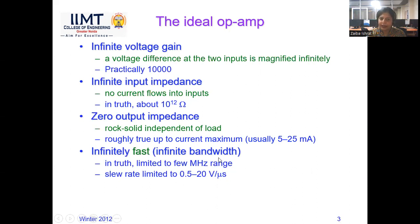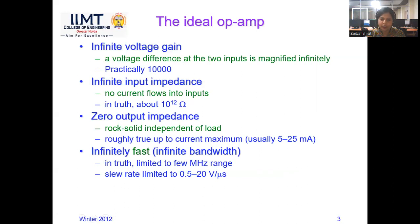The next ideal characteristic is infinite bandwidth. Bandwidth is the range of frequencies over which the op-amp can operate. This op-amp IC can work for both DC and AC signals — DC has zero hertz frequency, while AC has higher frequency. In the ideal situation, bandwidth should be infinite. But in practice, it is in the range of megahertz.